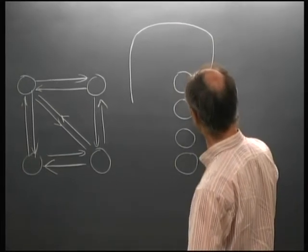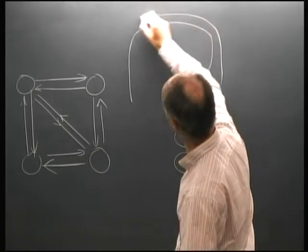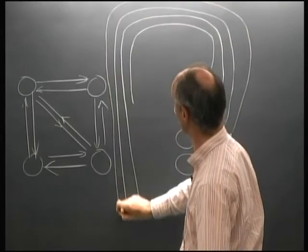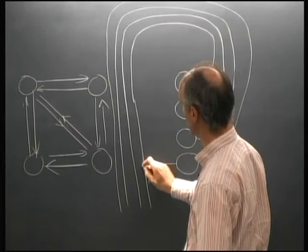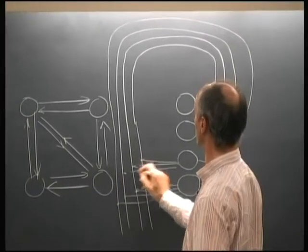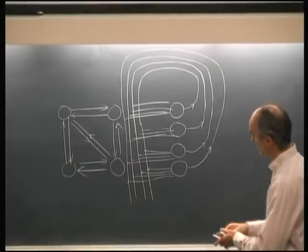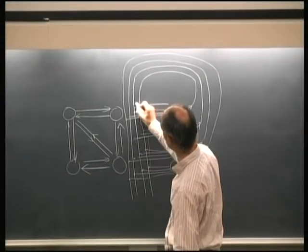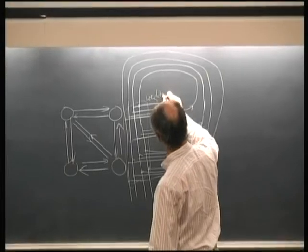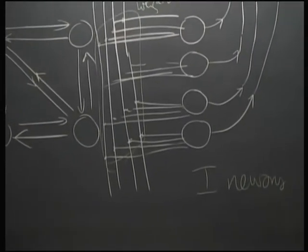Another way of drawing this is: here are all the outputs of all the neurons, they all come around on a racetrack, and this is where they gather their inputs — neuron one, two, three, four. The weights exist at these connection points, and if there are i neurons there's an i times i weight matrix connecting them.